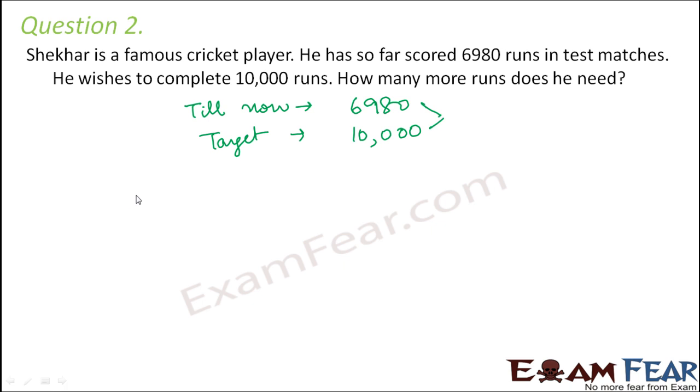So you need to subtract these two. Therefore, how do you subtract 10,000 minus 6980? So this would be 3,020. So 3,020 more runs will be needed for Shekhar to reach his target.